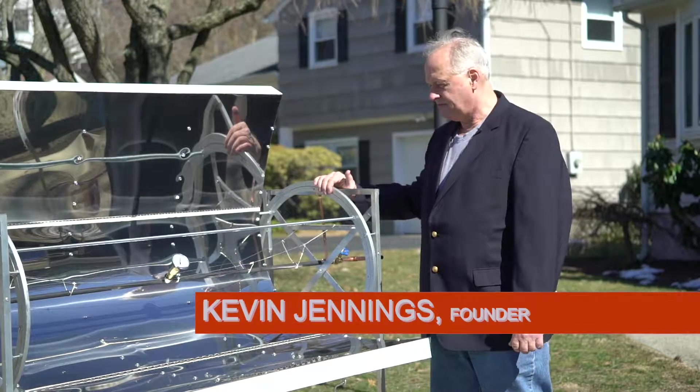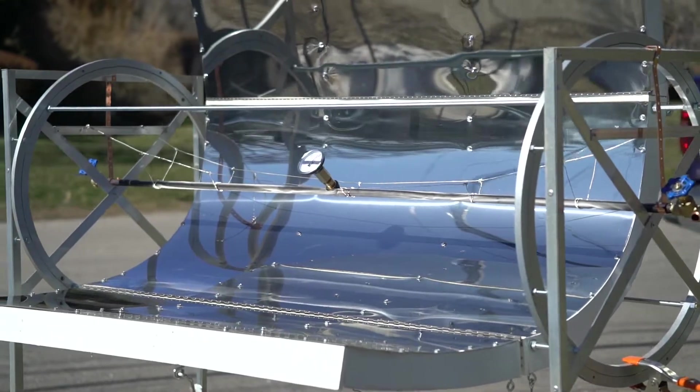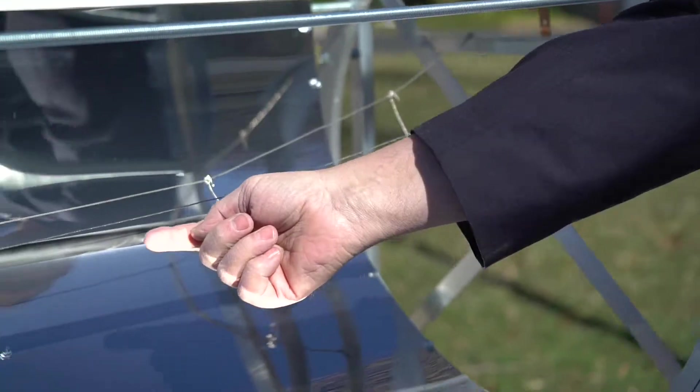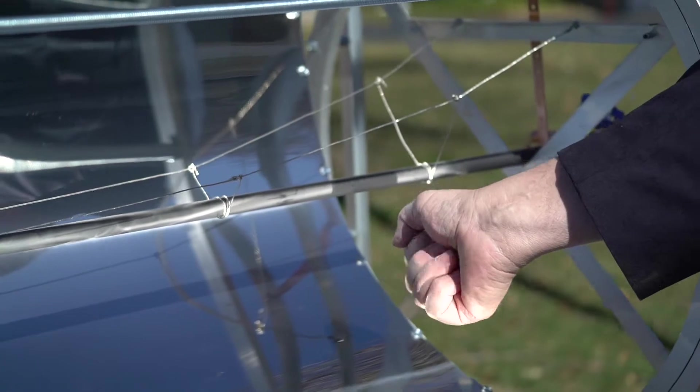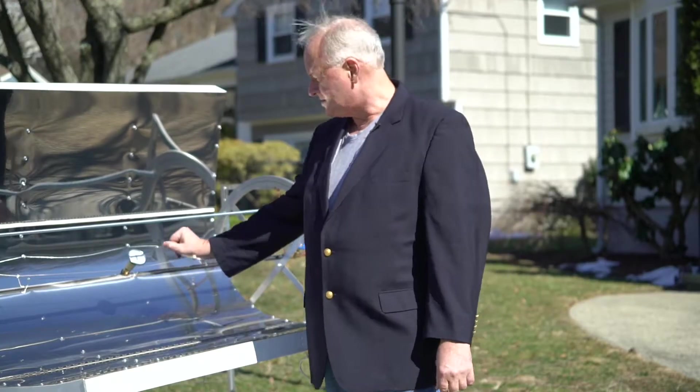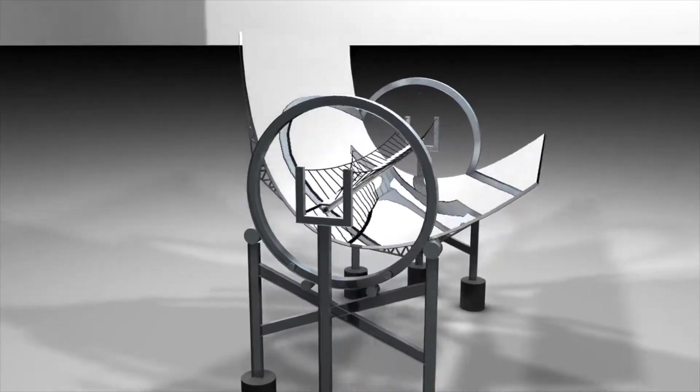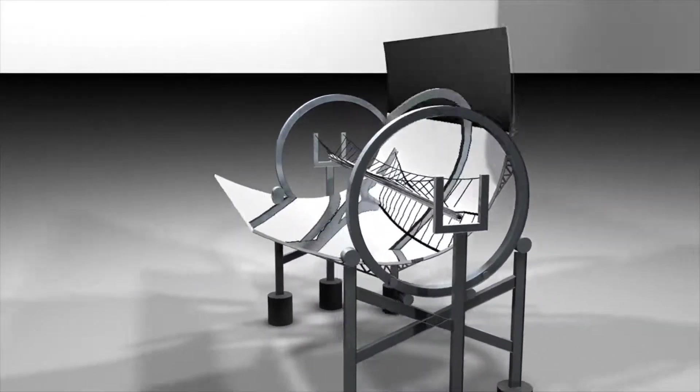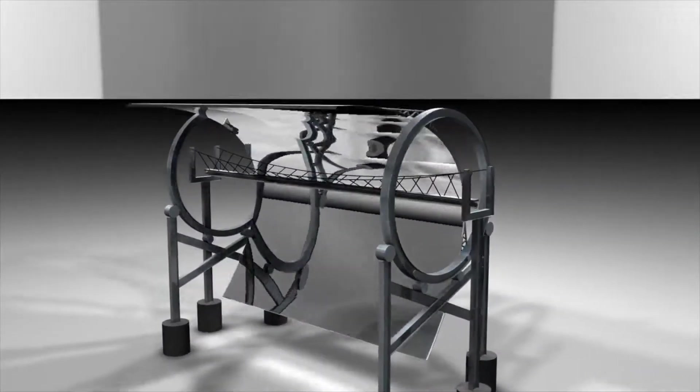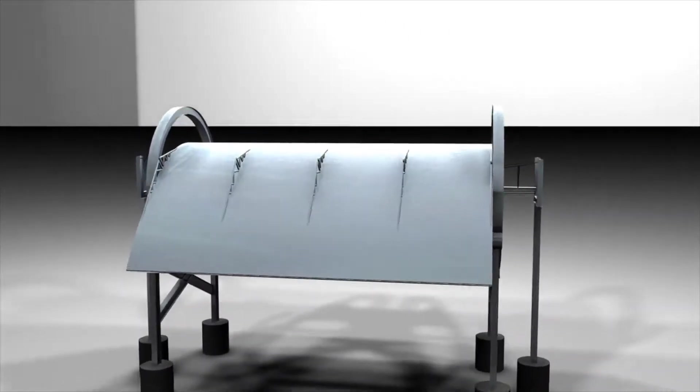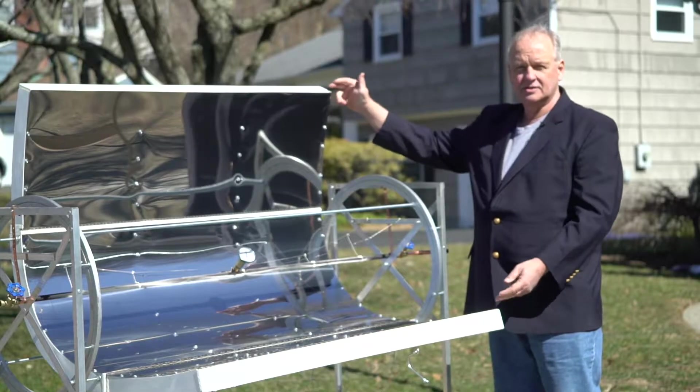This is the ring trough. The collector tube is fixed pipe solid, so that as the trough rotates, the tube doesn't move. You can see that the collector tube is not moving. This model is about 40 inches across.